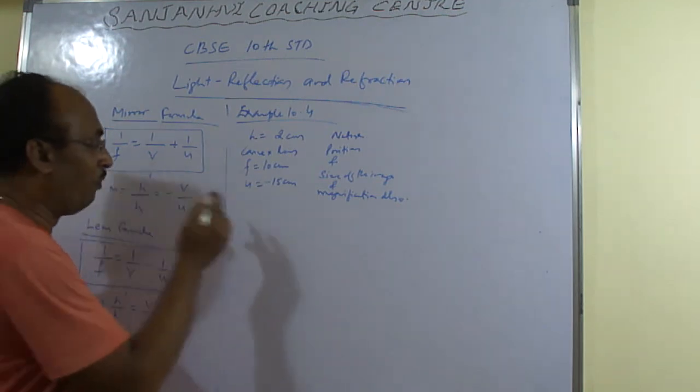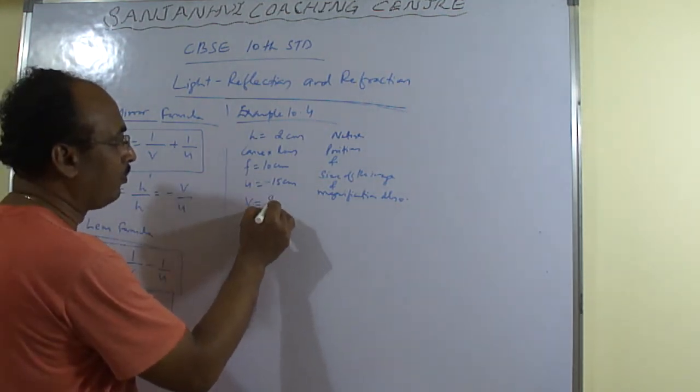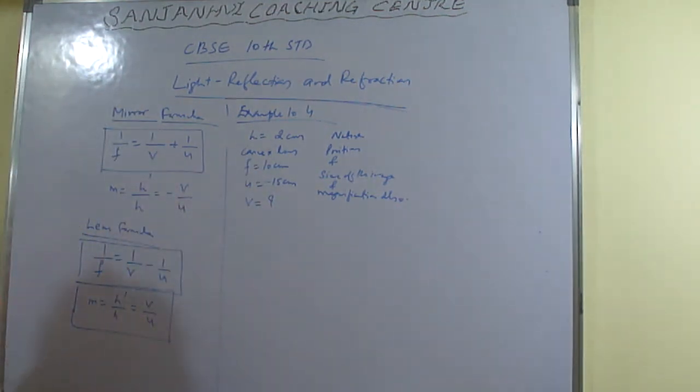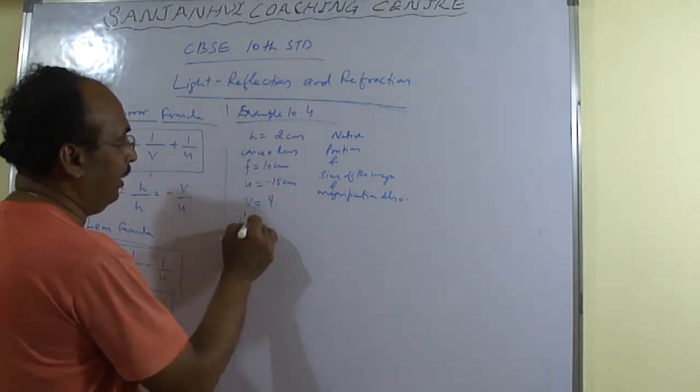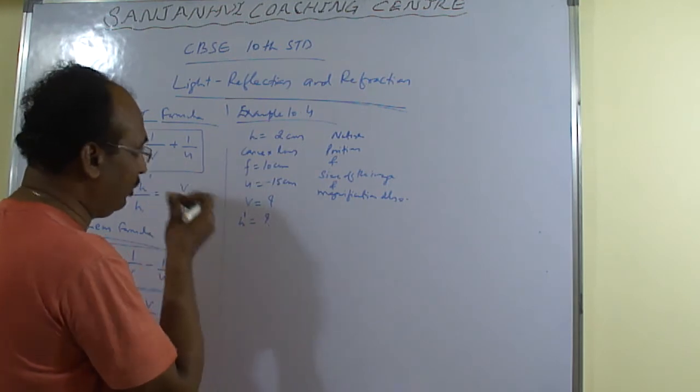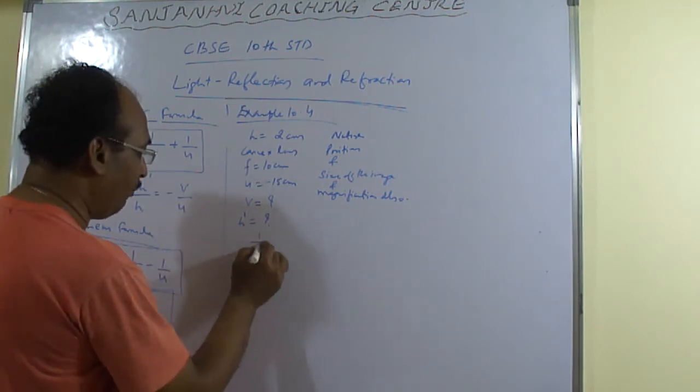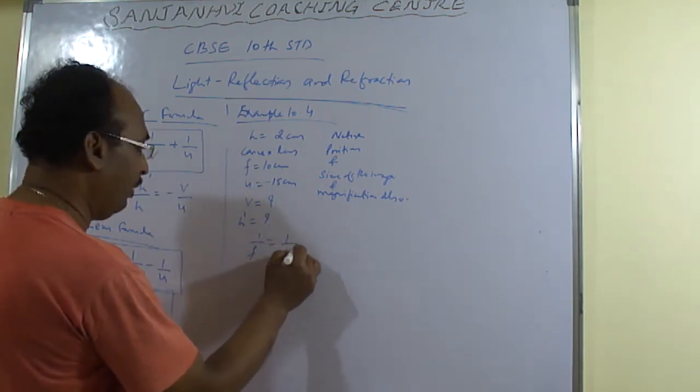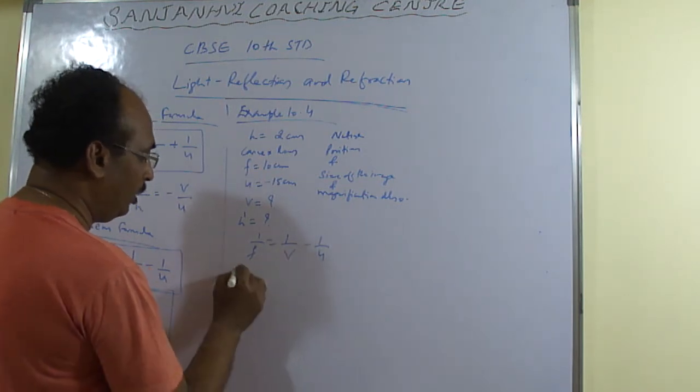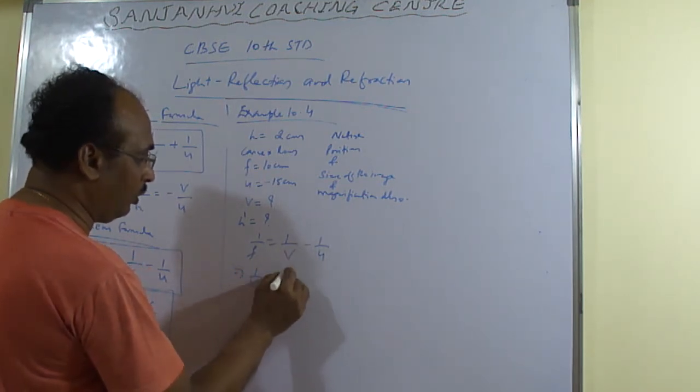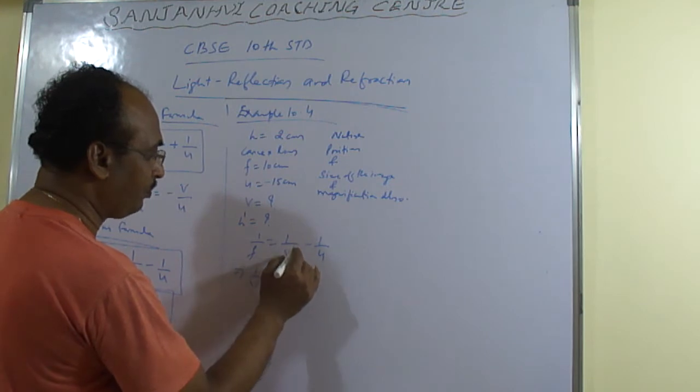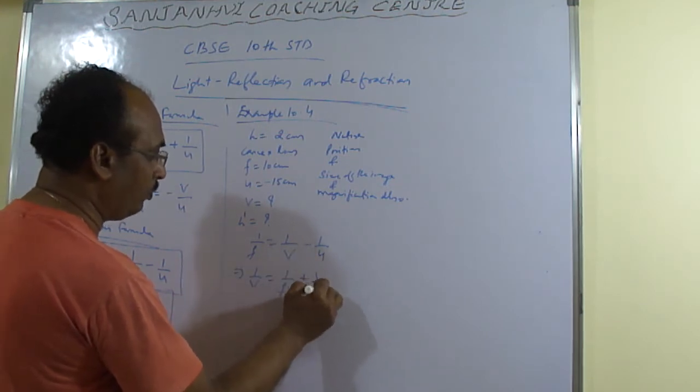Image distance we need to find, that is v. Height of the image also we need to find. So once we have utilized that formula, 1 by f is equal to 1 by v minus 1 by u. So this is given to 1 by v is equal to 1 by f plus 1 by u.